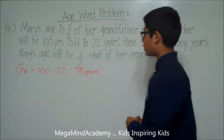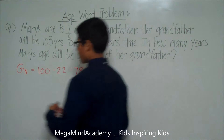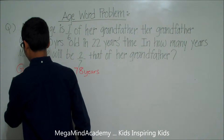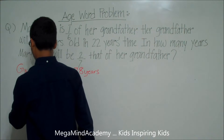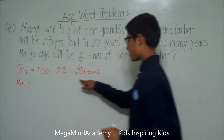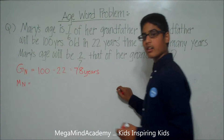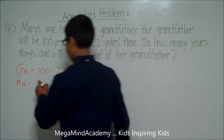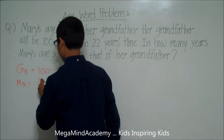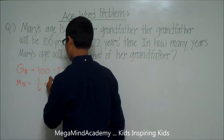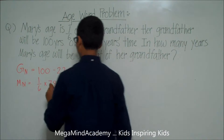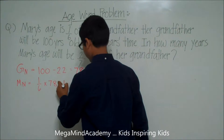This means that Mary's age now, M for Mary, N for now, is equal to one-sixth of seventy-eight. One-sixth of seventy-eight is equal to thirteen years old.